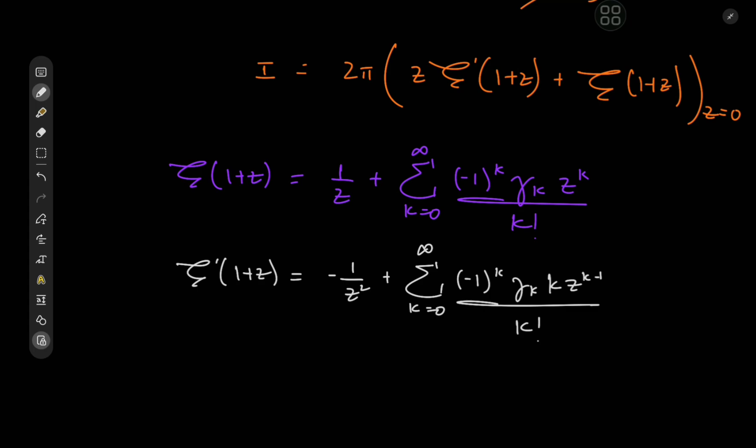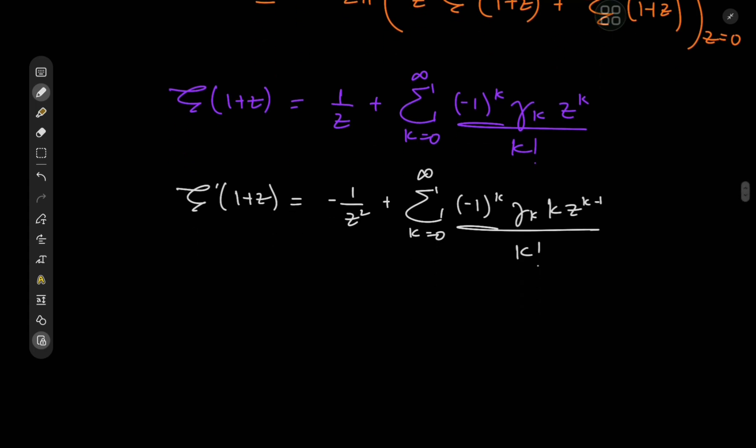And note that because we have a factor of k now, for the case of k = 0, we have a 0 term. So this implies that z·ζ'(1+z) actually equals -1/z plus the sum over k from 1 to ∞ of (-1)^k k γ_k z^k/k!.